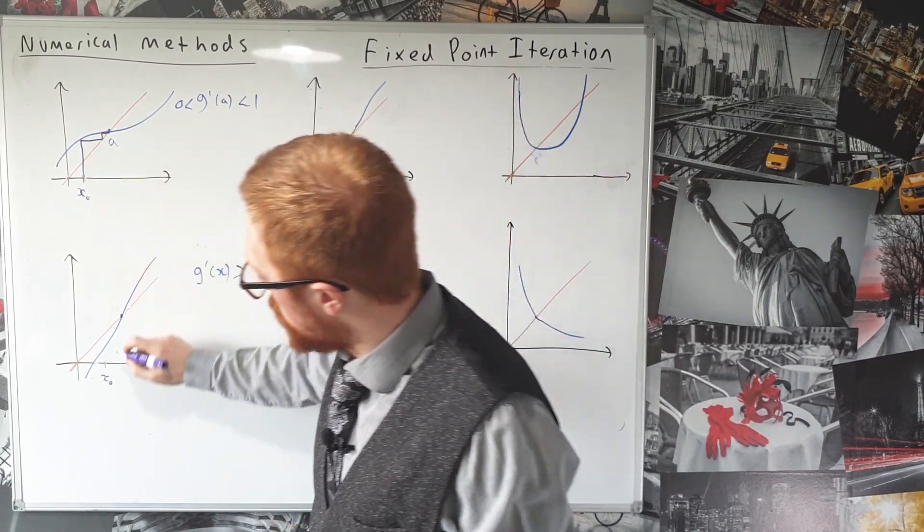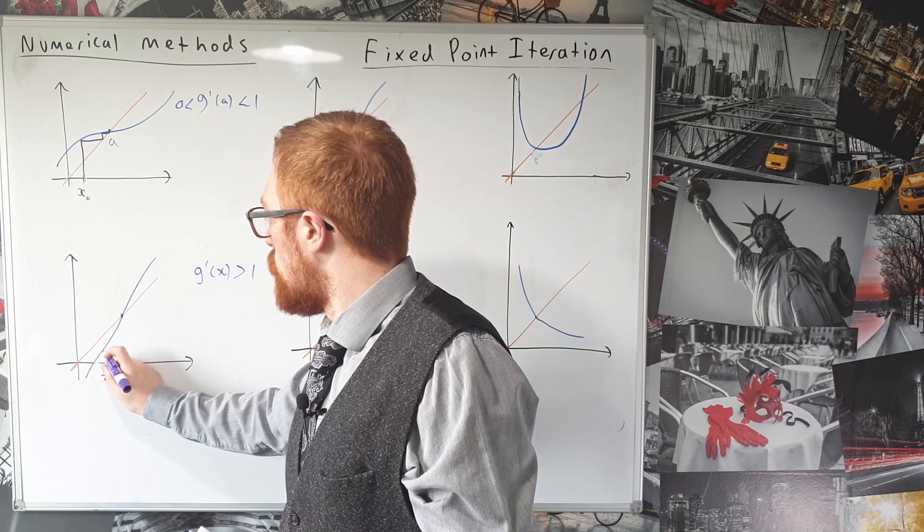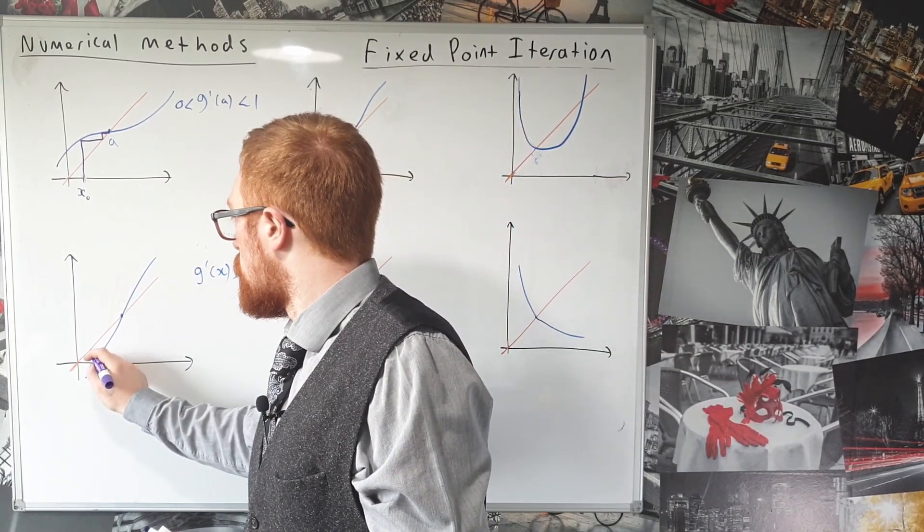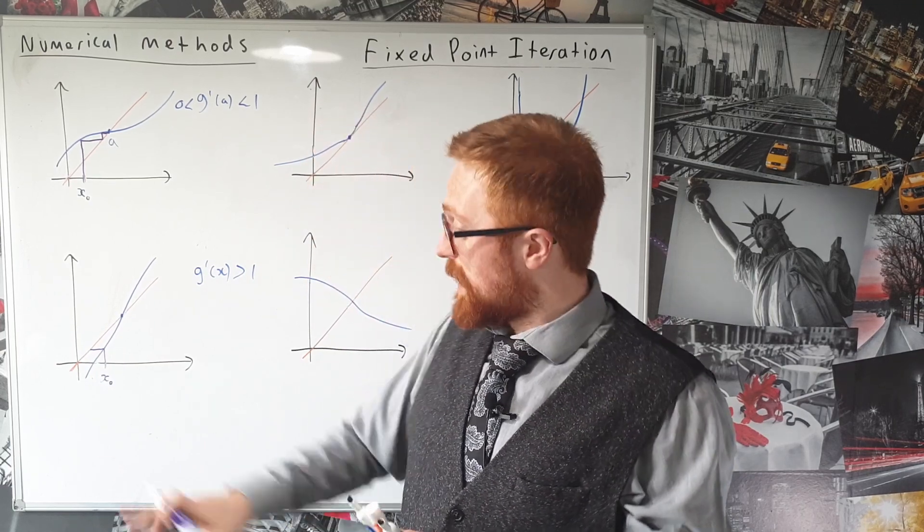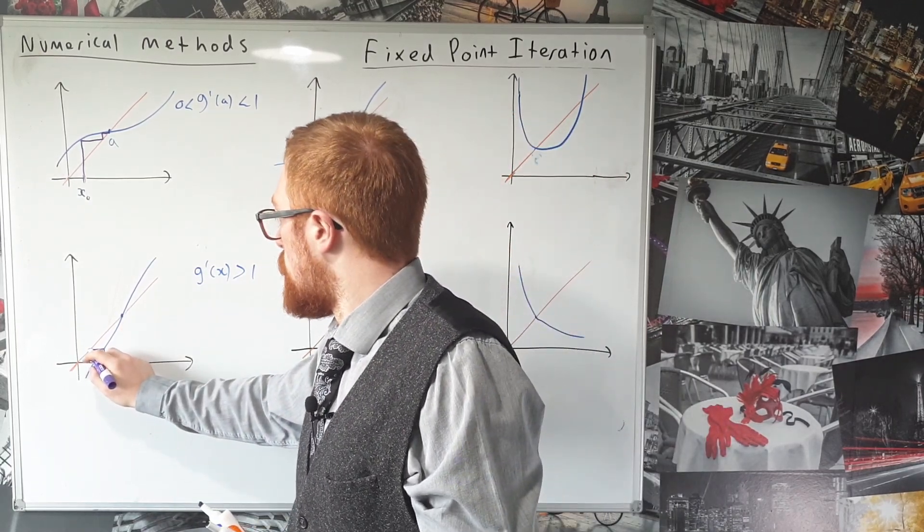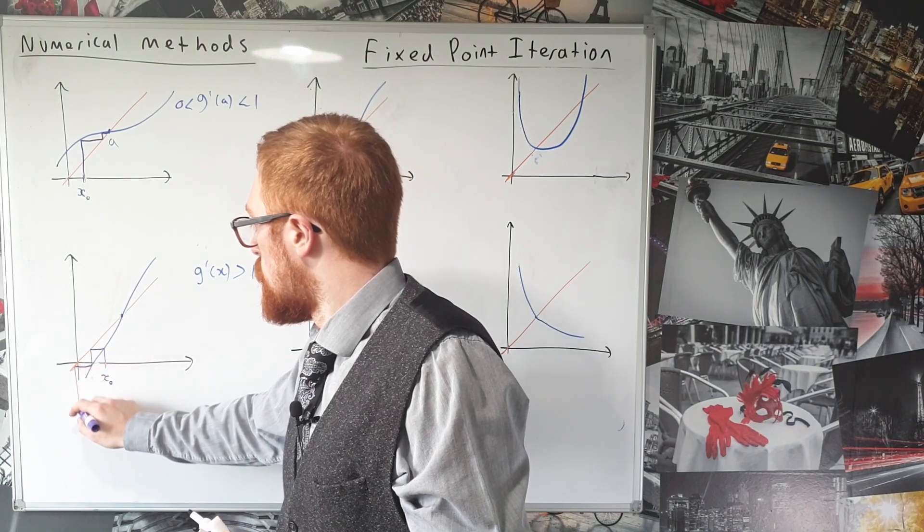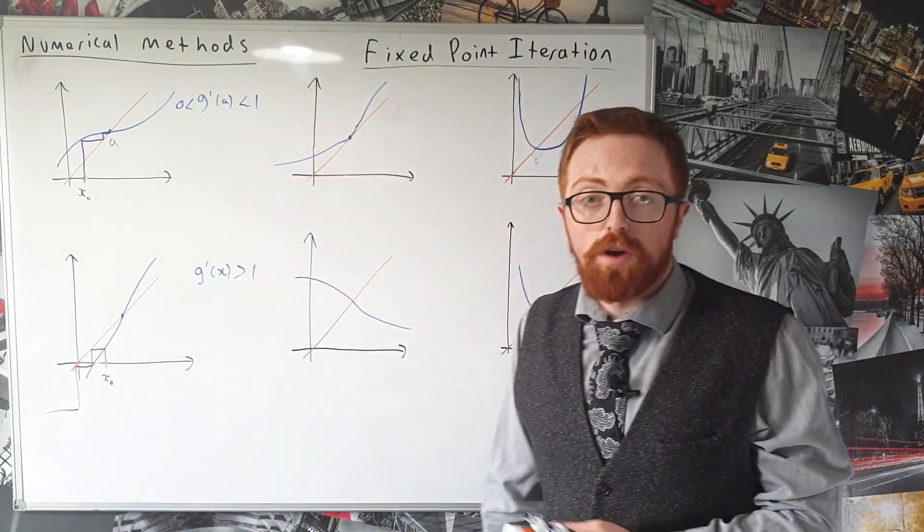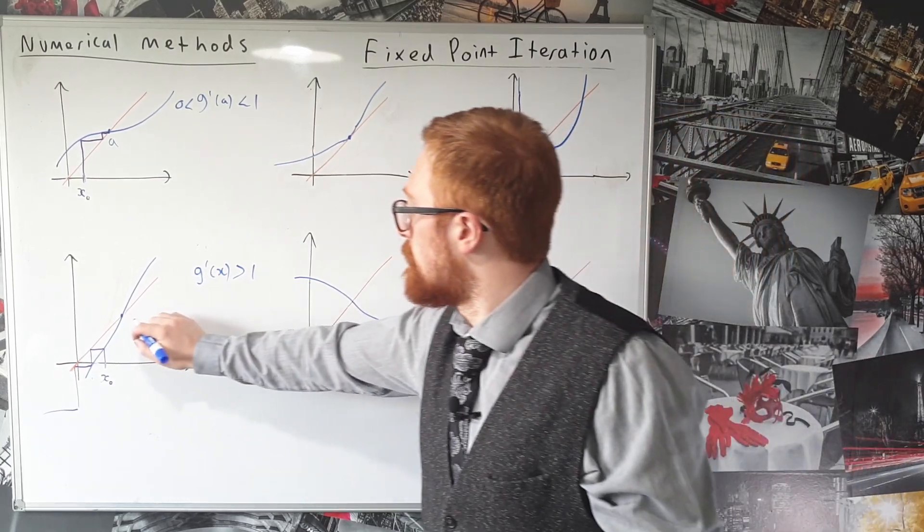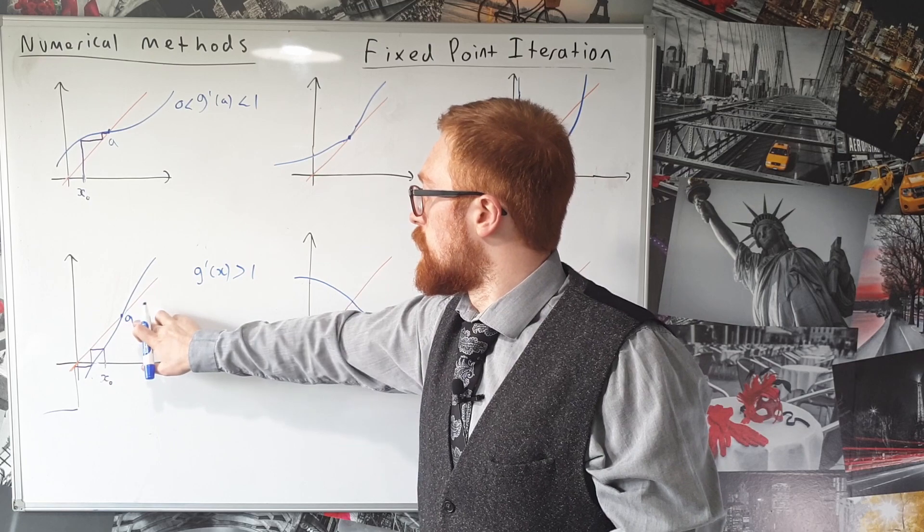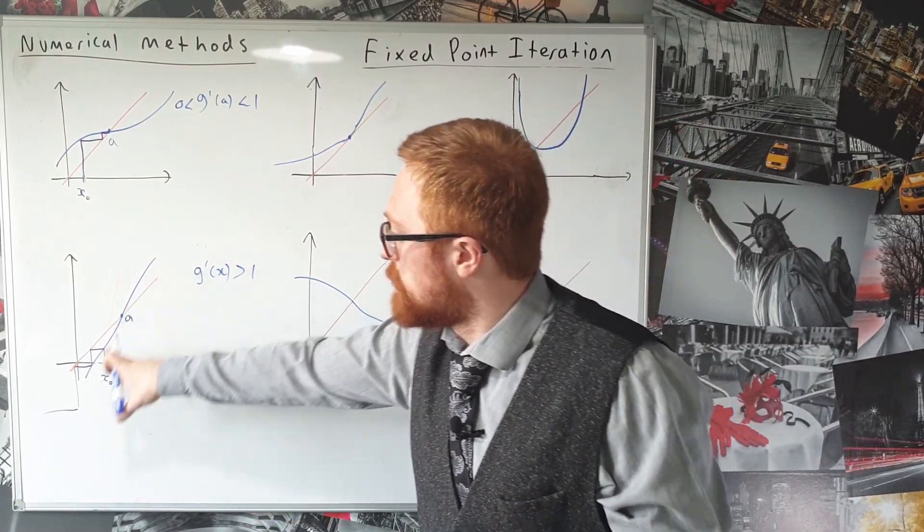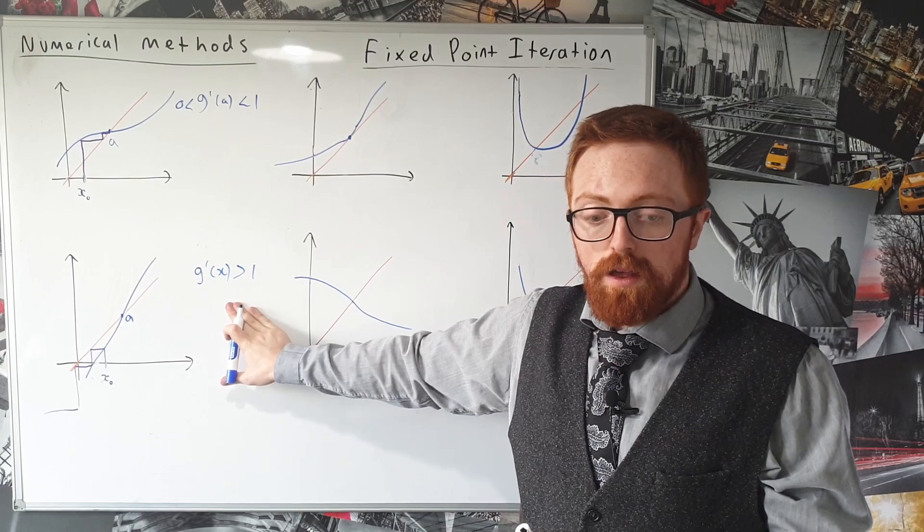So again, remember we've got to go to the blue line first. So we go up to the blue line, and then we've got to go across to that orange line, which takes us further away from this point that we want. And then we go back down to the blue line, and then across, and we're going to diverge. We're going to get farther and farther away from this point A. And that's because the gradient of this function, pretty much anywhere we can see, is bigger than 1.